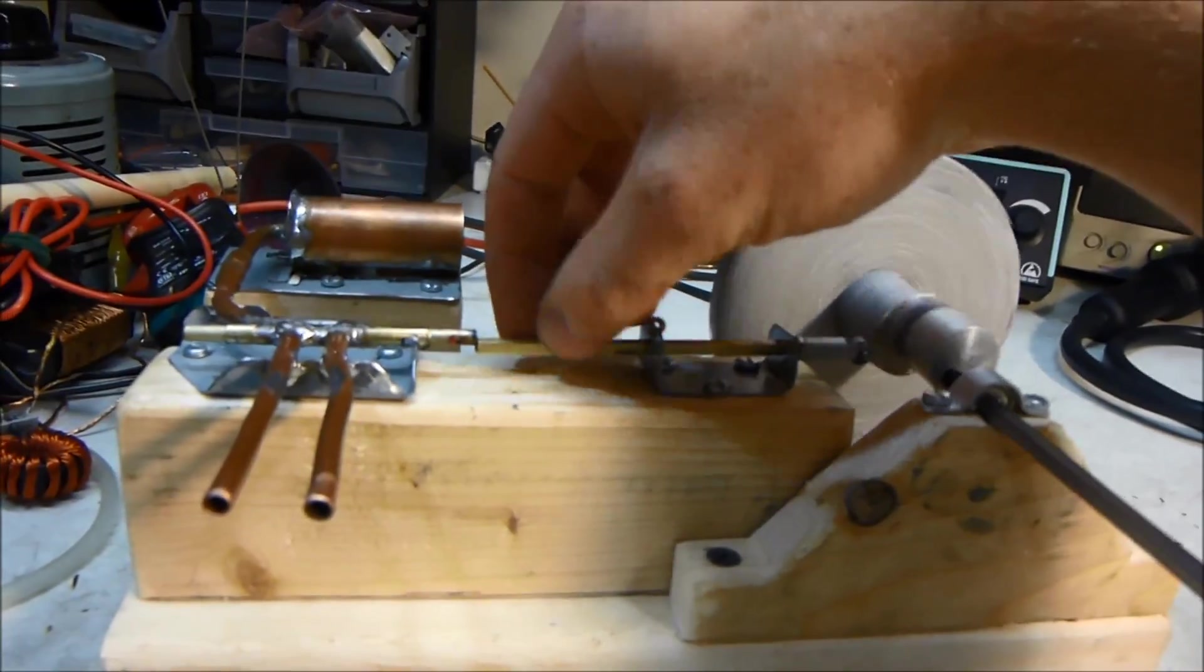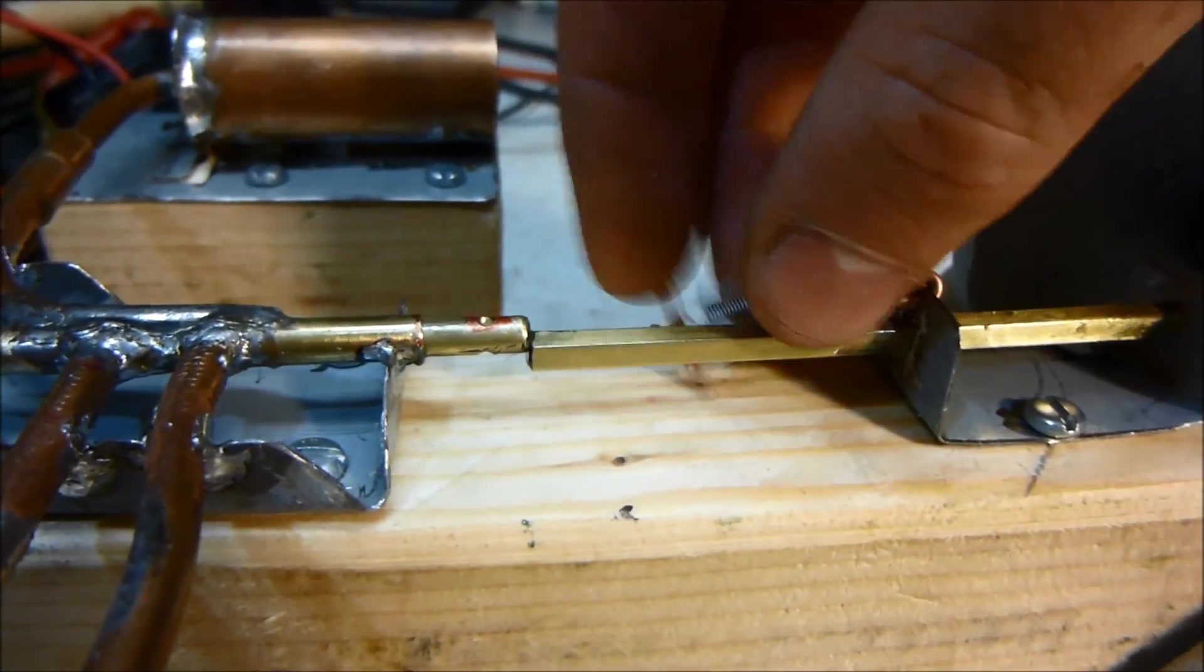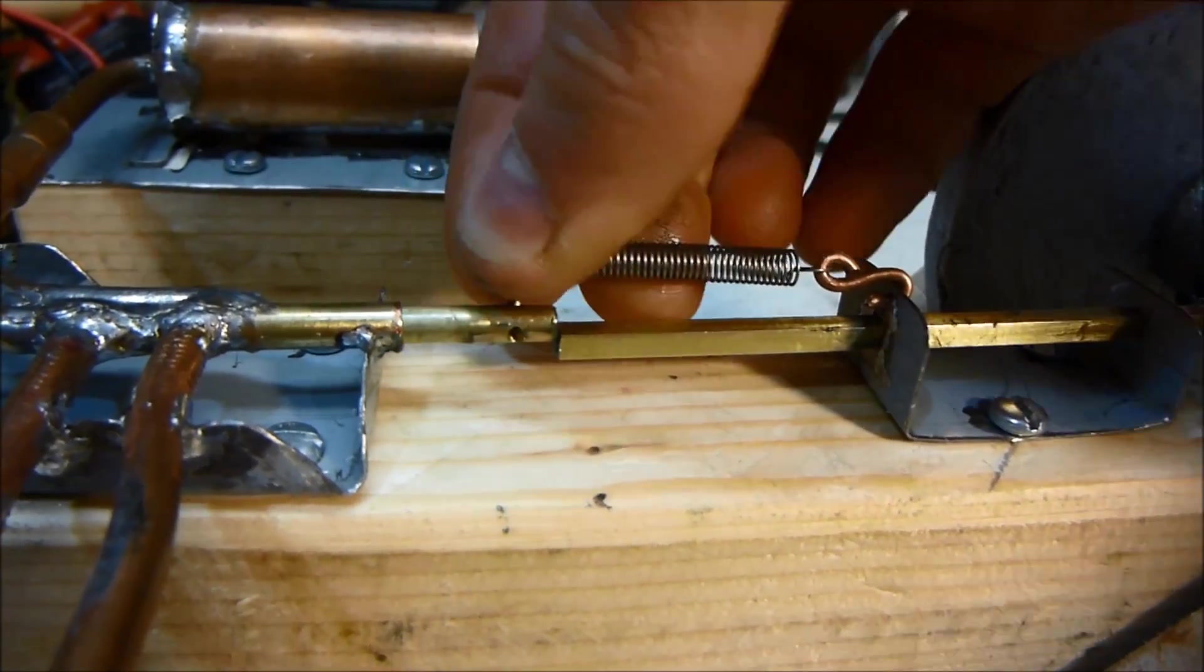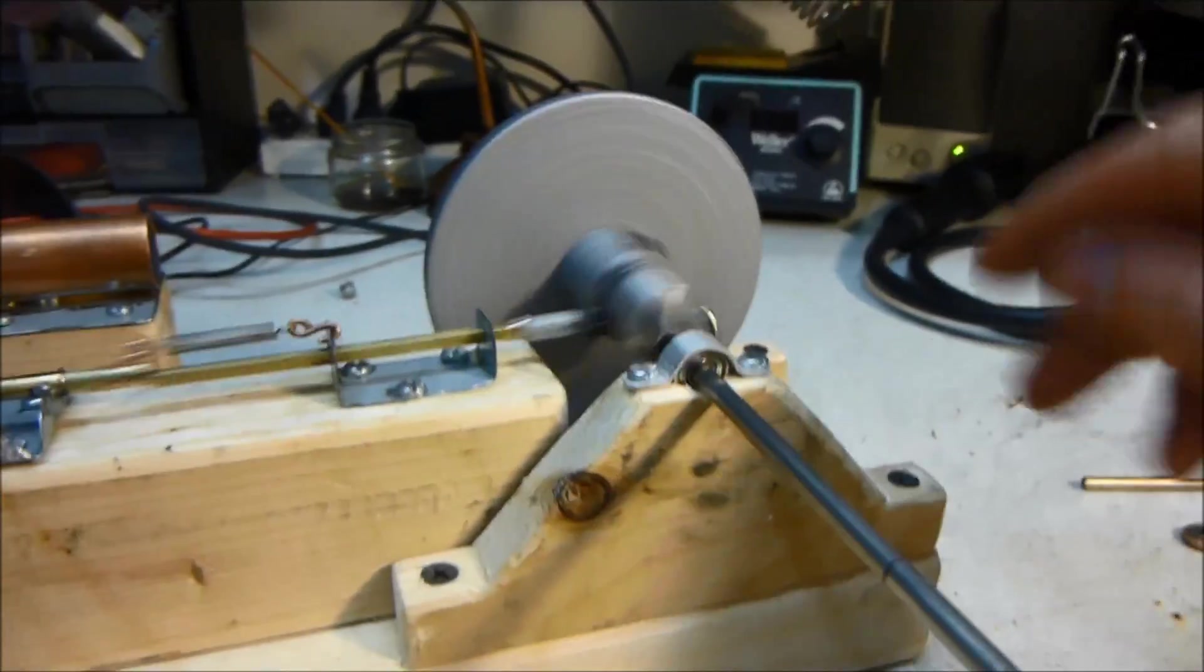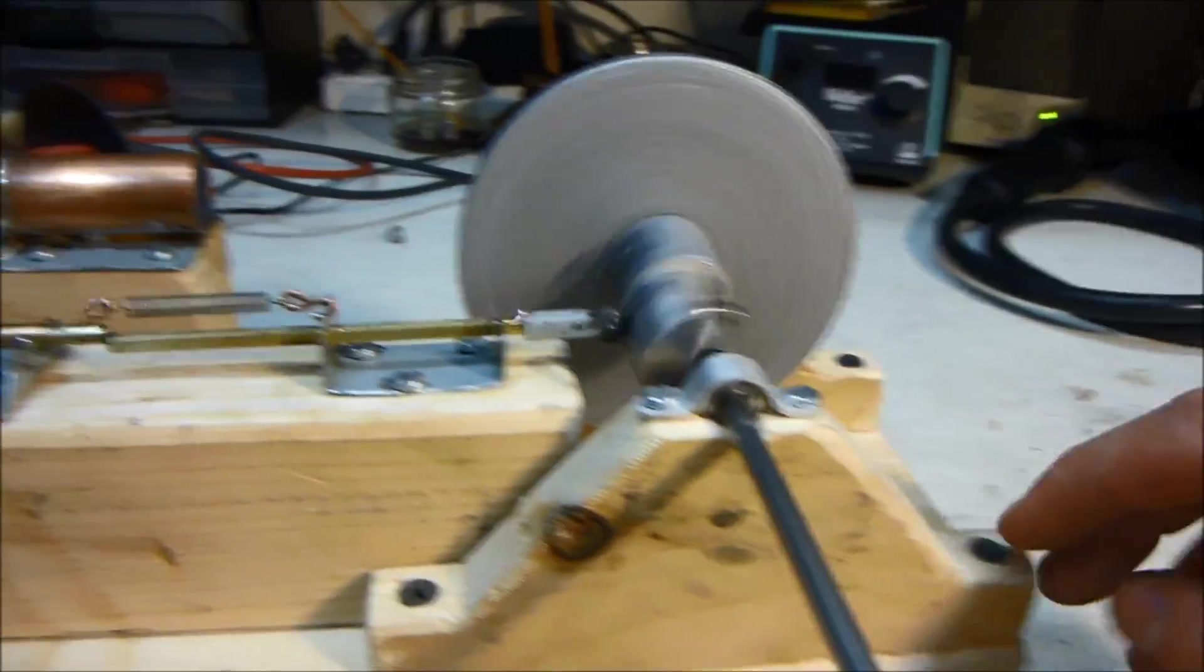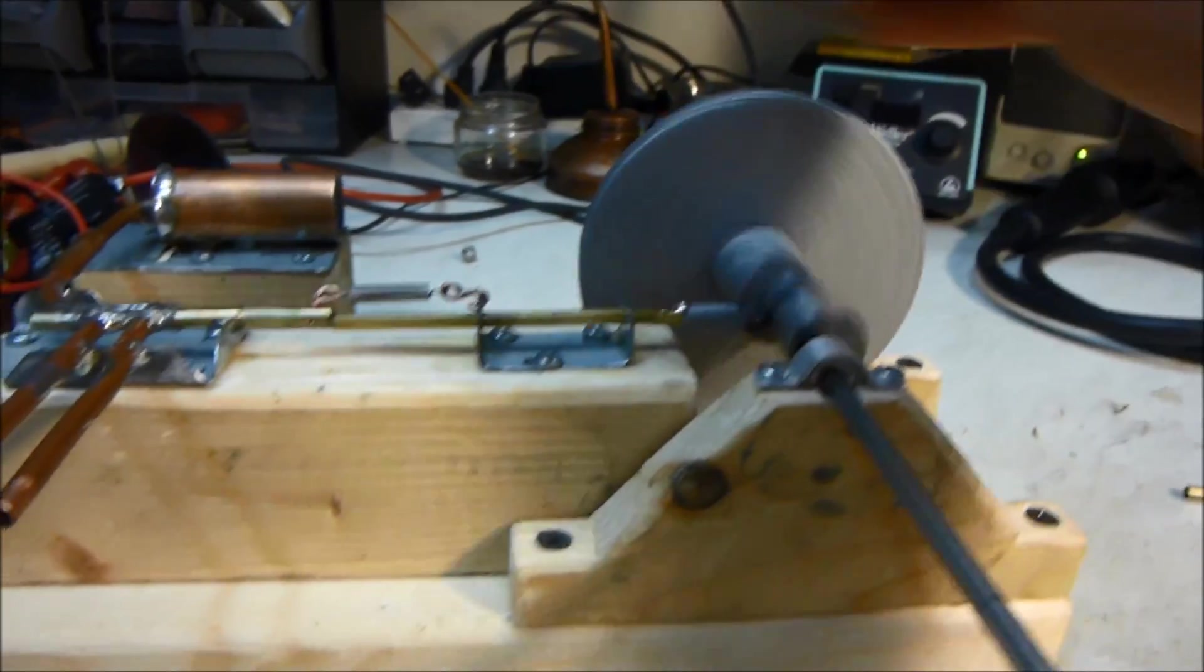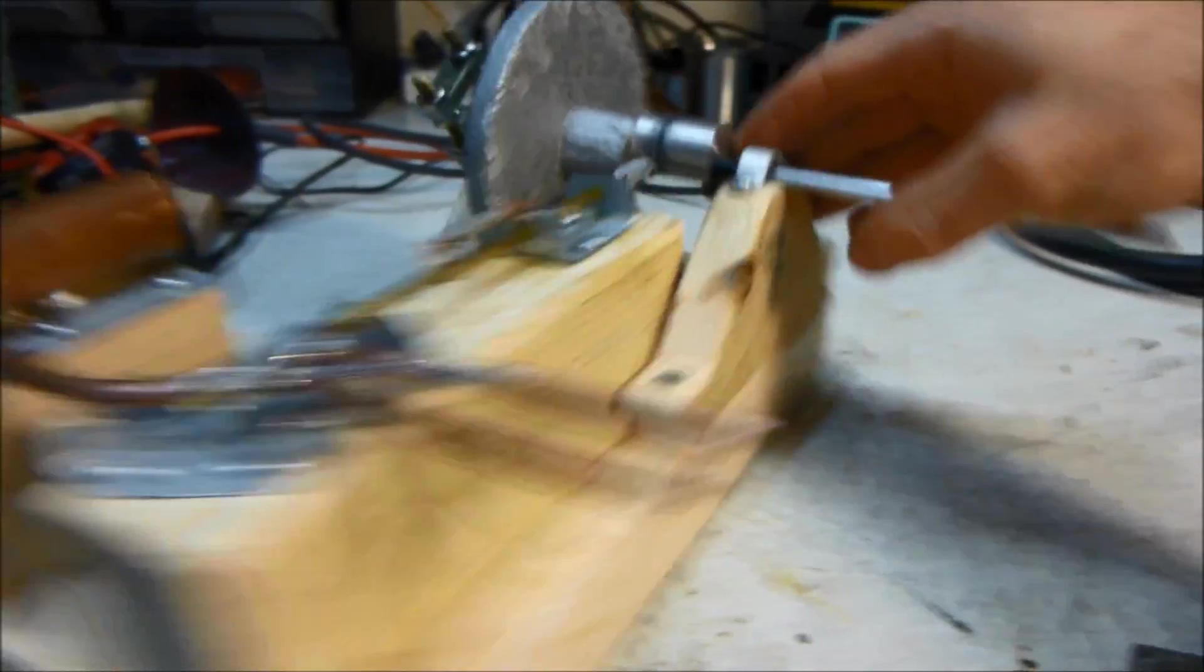So the little spring just goes in the little hole here, and that just returns it. As you can see, it adds some friction, but I mean, not a lot. So still runs pretty nice. So that is my steam engine.